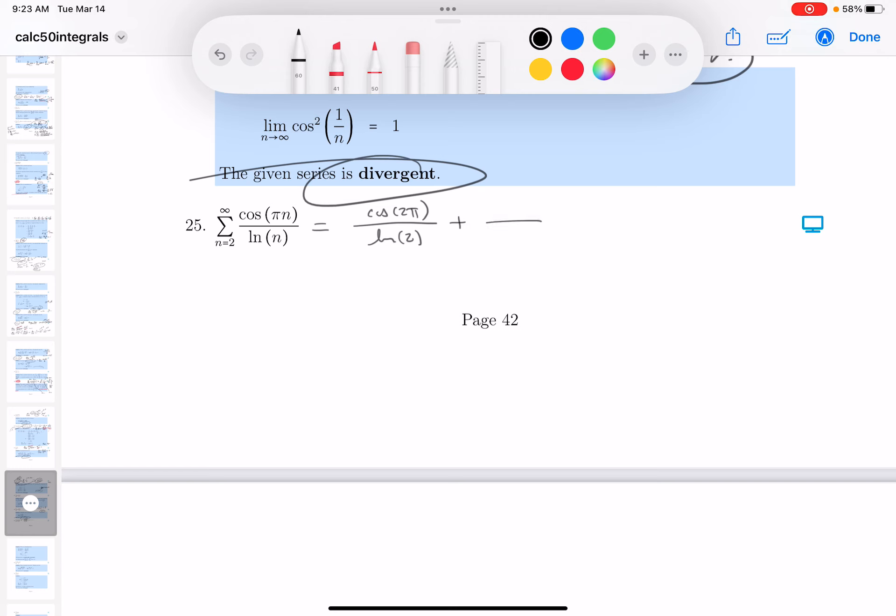The next term is going to be cosine of 3π over the natural log of 3. The next term is going to be the cosine of 4π, and that's going to be ln of 4, plus yada, yada, yada.